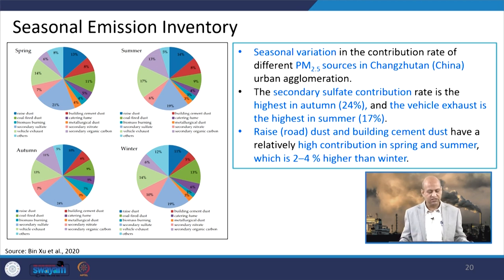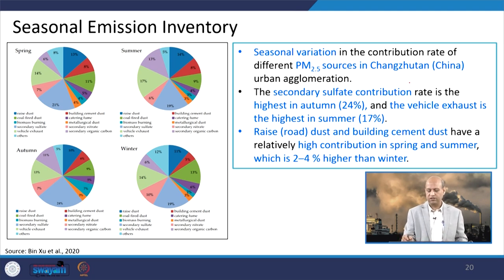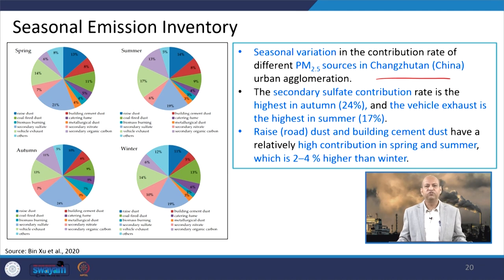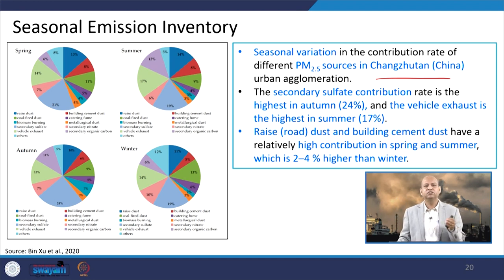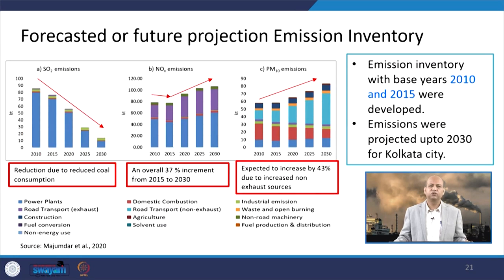For seasonal emission inventory, comparing spring, summer, autumn, and winter shows seasonal variation. Contribution rates for PM2.5 are shown — secondary sulphate contribution rate is highest in autumn at around 24%, and vehicle exhaust is highest in summer. Road dust and building cement dust have a relatively high contribution in spring and summer, about 2 to 4% higher than winter. Those kinds of insights can be drawn from figures based on seasonal or temporal emission inventory.